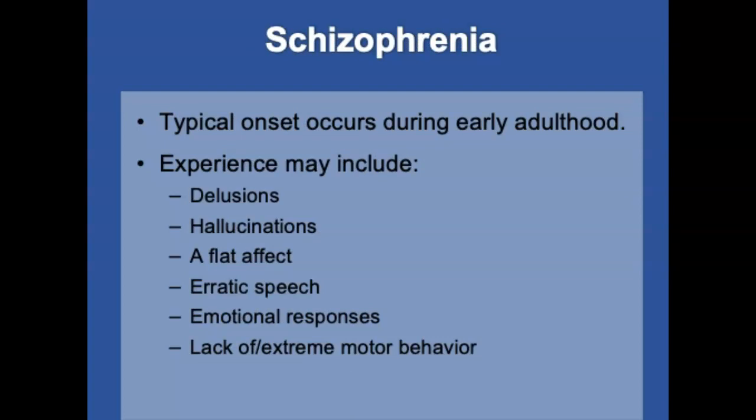Schizophrenia affects 1 in 100 people in their lifetimes, with typical onset during early adulthood. Contributing influences may include genetics, microbiologic, psychological, and social influences. Schizophrenics may experience delusions, hallucinations, apathy, flat affect, lack of interest in pleasure, erratic speech, abnormal emotional response, or extreme motor behavior.